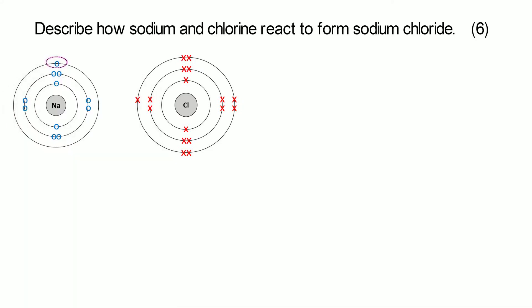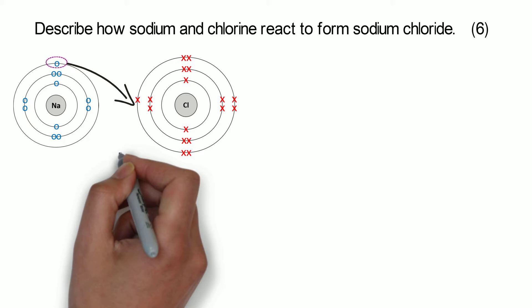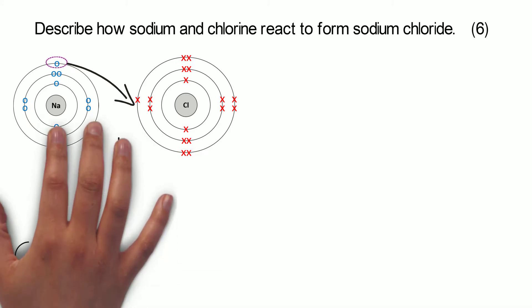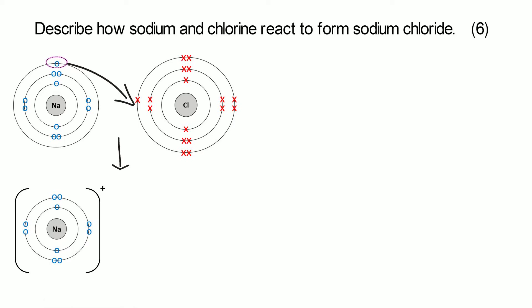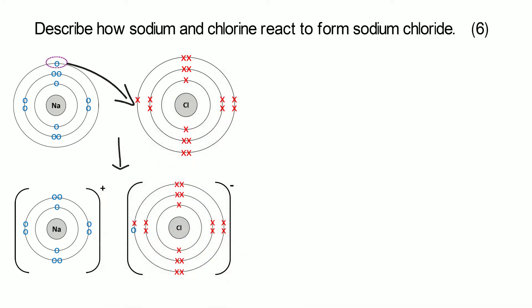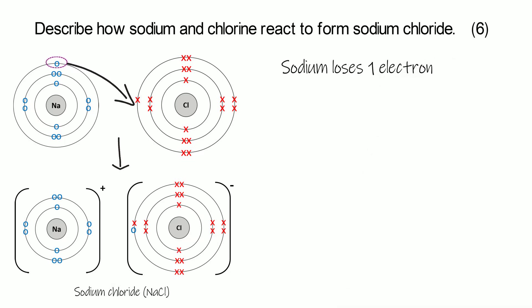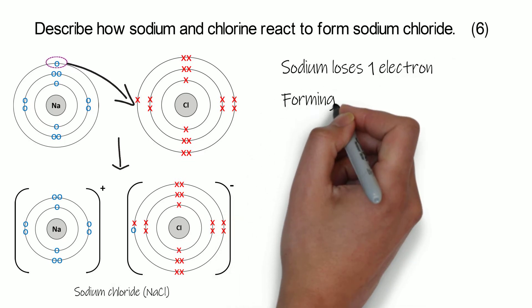So where sodium wants to lose an electron and chlorine wants to gain one, that electron from sodium ends up being transferred over to the chlorine atom. We then get two ions being formed: the sodium ion, which has now lost that electron so it's become positive, and the chloride ion, which has gained an extra electron so it's become negative. This forms the compound sodium chloride — NaCl — that's its formula.